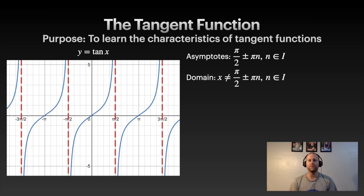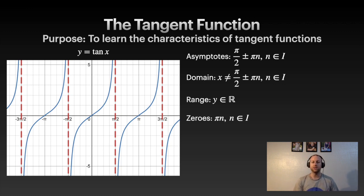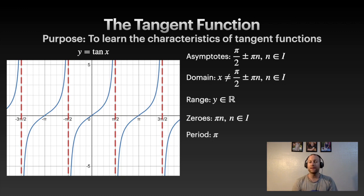The domain is essentially all real numbers except at the asymptotes — take the asymptote equation and say x does not equal those values. The range is all real numbers, since those curves extend up and down forever. The zeros, where tan x = 0, occur at every multiple of π: 0, π, 2π, 3π, negative π, and so on. The period of the tangent function is π, unlike sine and cosine which have period 2π.